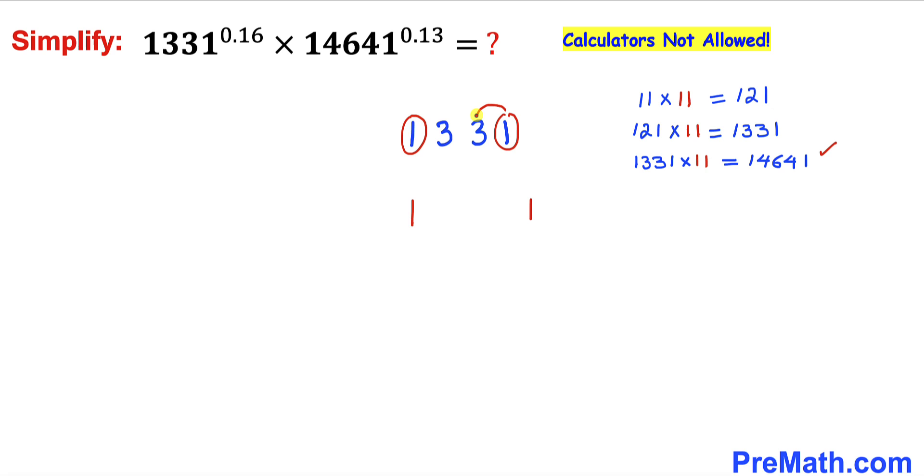Let's start off from the right hand side. 1 plus 3 is going to give us 4, and then 3 plus 3 is 6, and 3 plus 1 is 4. No wonder we got this 14641, same as over here.